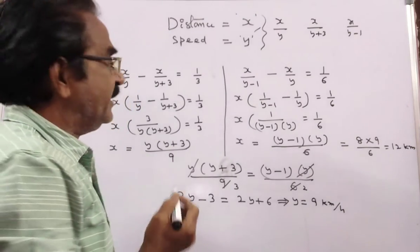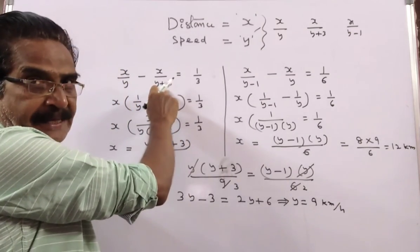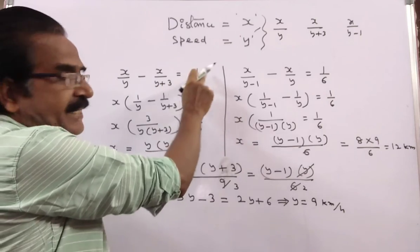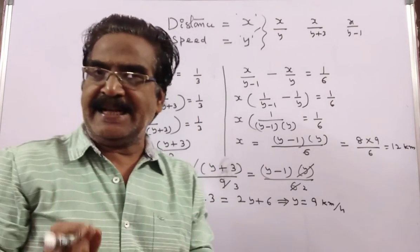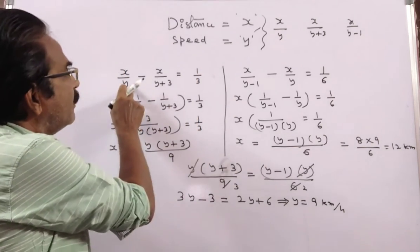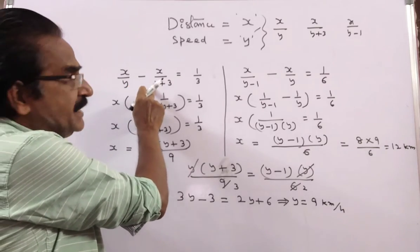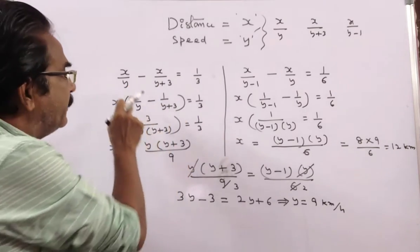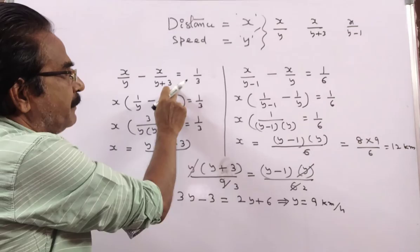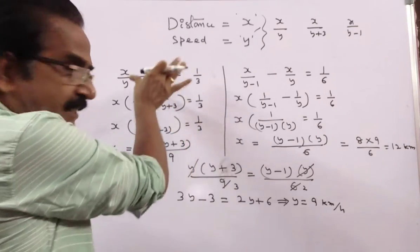It is given that if he moves at 3 kmph faster, it takes him 20 minutes less. That means normal time minus increased speed time equals 1 by 3 hour. So x by y minus x by (y plus 3) equals 1 by 3. This is case 1.